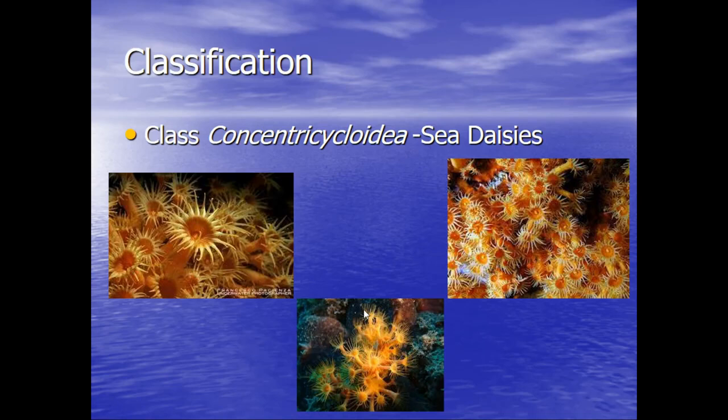Next we have class Concentricloidia — that one is a mouthful. These are the sea daisies, and as you can tell they get their name because they do kind of resemble a field of daisies. They are also sessile; they stay in one spot and will also catch their food as it drifts by, similar to the sea lilies and feather stars.